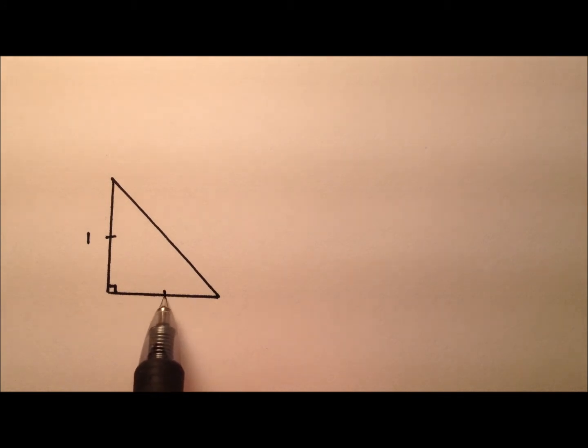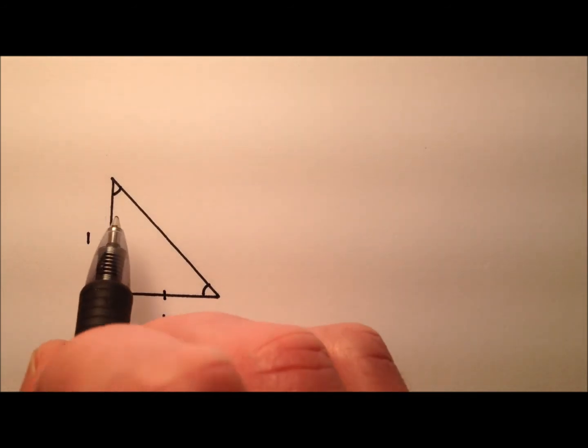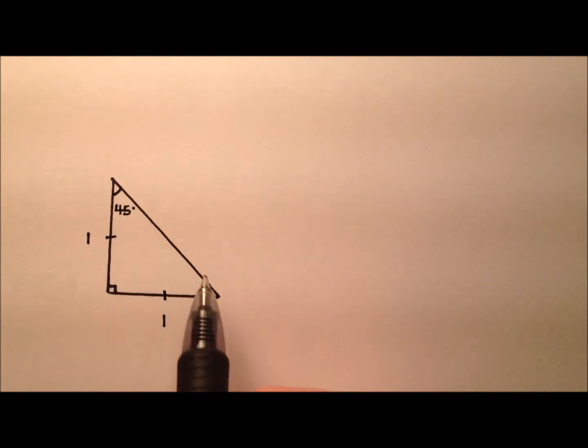If this is isosceles, we know that these two acute angles are the same, so when we divide up that leftover 90 degrees, each of these will be 45 degrees.